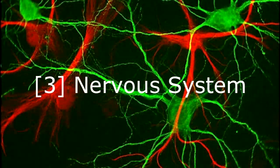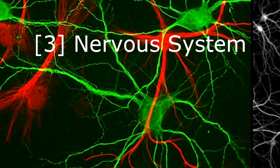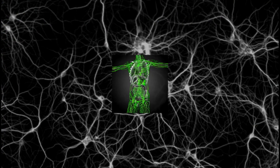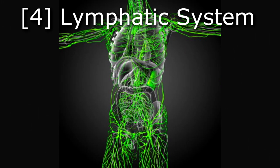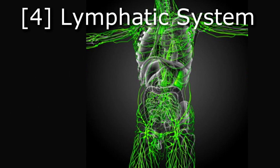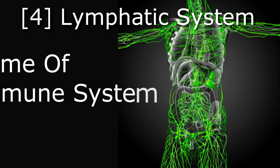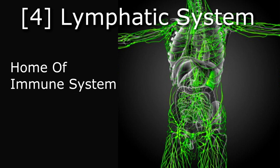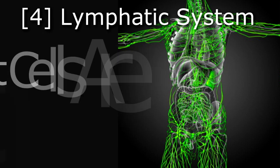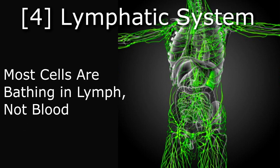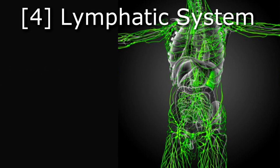Back to the body — the third is the nervous system, in the brain. Here you can see a few images of fractal branching in the neurons in the brain. The next is the lymphatic system, which, like the circulatory system, doesn't quite branch to the same level but very close. This is the home of your immune system, as well as sort of a sewage system in your body. Most of your cells are bathing in lymph, not blood. Blood carries nutrients to the capillaries, which diffuse into the lymph and into the cells.